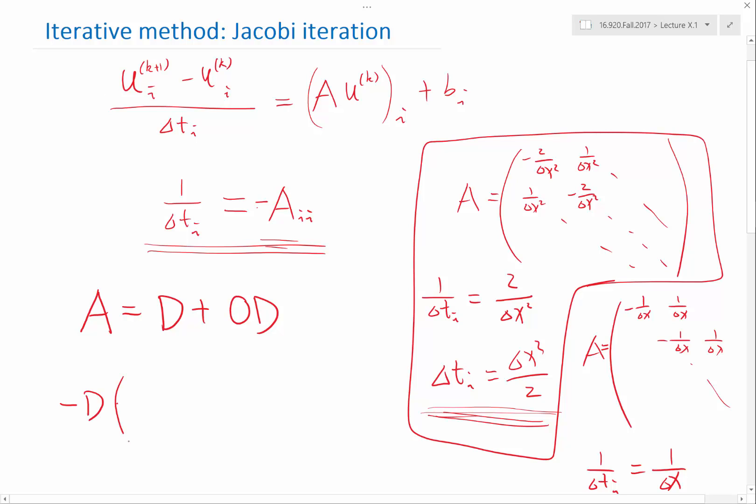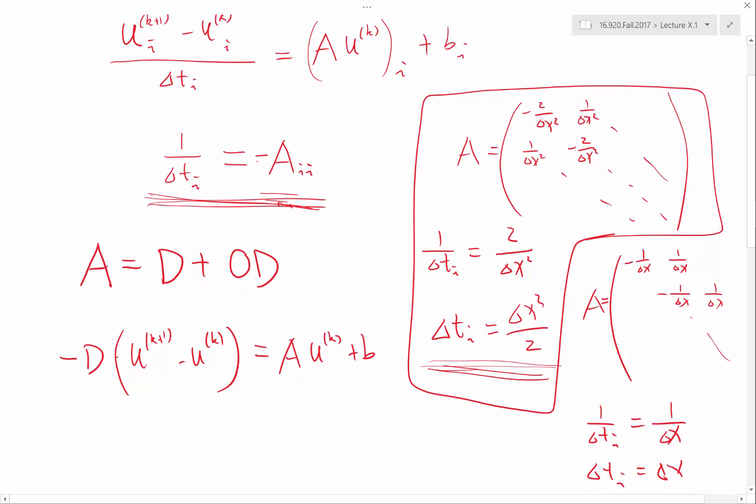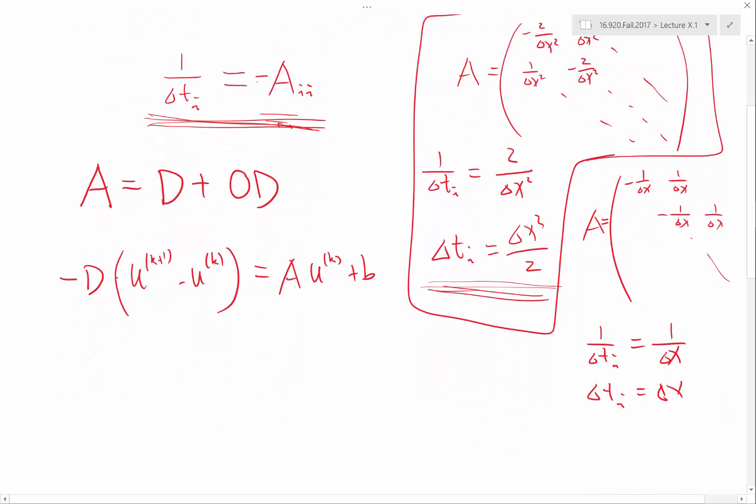this 1 over delta t i is equivalent to saying I have minus d. So the left-hand side is transformed from minus d times u k plus 1 minus u k, right? This is by just taking this 1 over delta t. And that's equal to a times u k plus b.